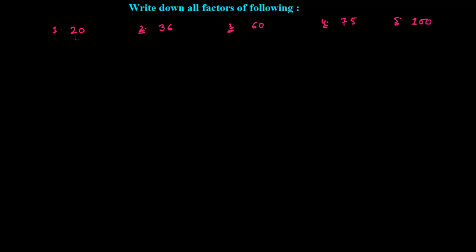First, let's talk about 20. The numbers that can divide 20 exactly are called the factors of 20. If you see 20, this number is divisible by 1, giving 20 times.